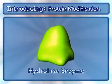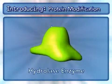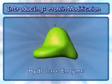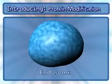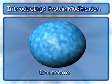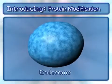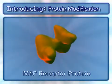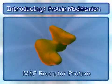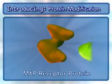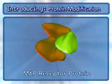Hydrolases are enzymes that degrade other molecules. The endosome is an organelle that contains molecules to be degraded. Other key components include the M6P receptor protein.